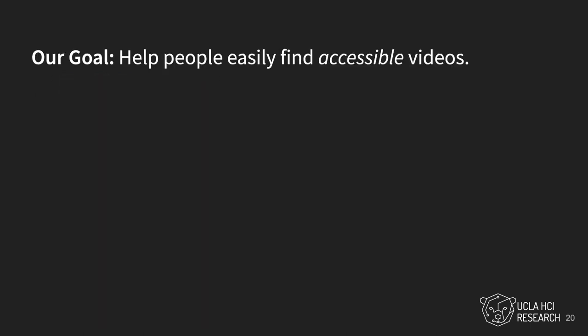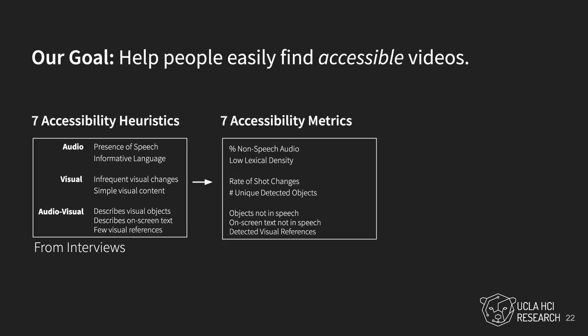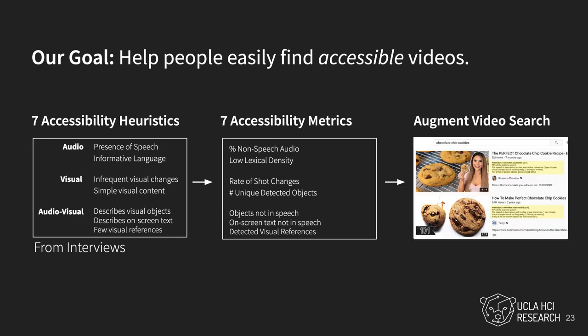To help people easily identify accessible videos, we present seven metrics and corresponding algorithms to automatically assess video accessibility, then augment a search interface with accessibility metrics to let people filter out inaccessible content.